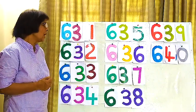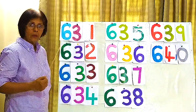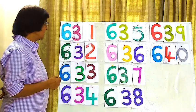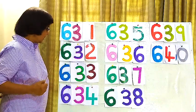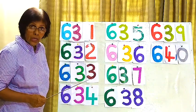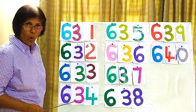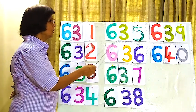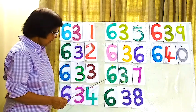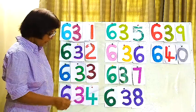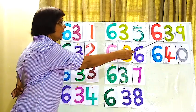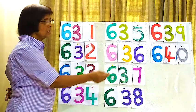Now we will start from this number to the last number. We will read all the numbers and start the lesson. 631, 632, 633, 634, 635, 636, 637, 638, 639, 640.